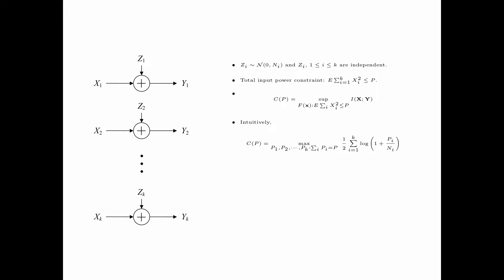Intuitively, C of p is equal to the maximum over all p1, p2 up to pk, such that the summation i of pi is equal to p, of one-half times the summation i equals 1 up to k of log of 1 plus pi over ni. Where the input random variable for the i-th channel is the Gaussian random variable with mean 0 and variance pi, and the input variables x1, x2 up to xk are mutually independent.